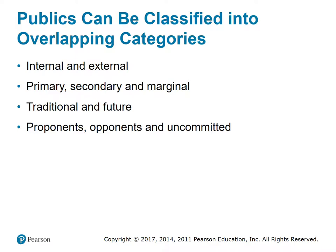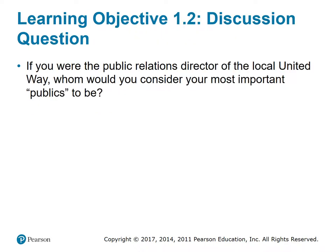Internal publics are inside the organization such as supervisors, clerks, managers, stakeholders, stockholders, and the board of directors. External publics are those not directly connected with the organization, like the press, government, educators, customers, suppliers, and the community. Primary publics can most help or hinder an organization's efforts; secondary publics are less important; and marginal publics are the least important of all. Employees and current customers are traditional publics; students are potential or future ones. An institution must deal differently with those who support it and those who oppose it. Discussion question: if you were the public relations director of the local United Way, whom would you consider your most important publics?